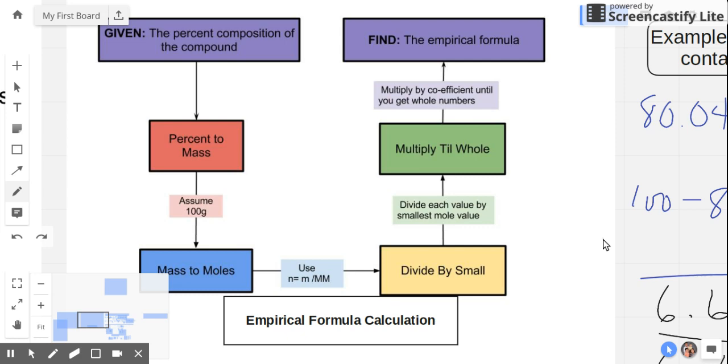Let's refresh ourselves with the process of getting empirical formula. Convert the percent value to just the mass by removing the percentage symbol and making it a gram. Always bearing in mind that we have 100 grams of sample. Then from the mass values, we readily convert it to moles by dividing the mass by the molar mass that can be found in the periodic table.